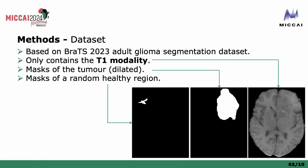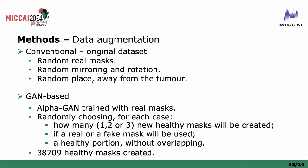The dataset for this task is based on the BRATS 2023 adult glioma segmentation, but only containing the T1 modality, the dilated mask of the tumor, and the mask of a random healthy region. The dataset uses conventional data augmentation to create the healthy masks, which includes selecting a random healthy mask, randomly mirroring and rotating, and placing it in a random location in the brain.